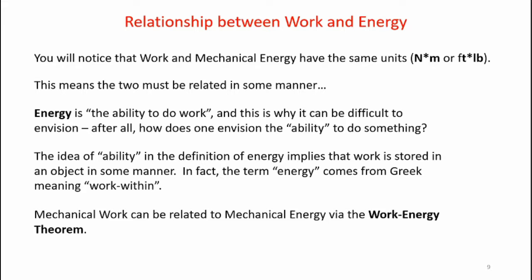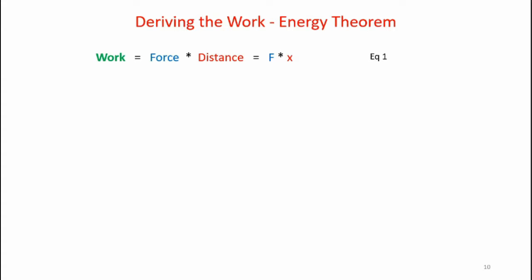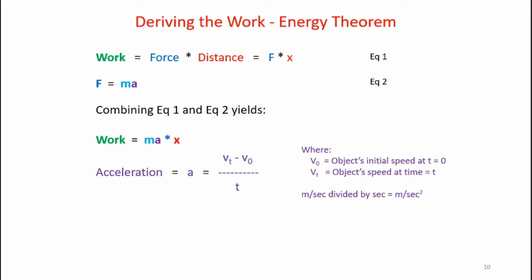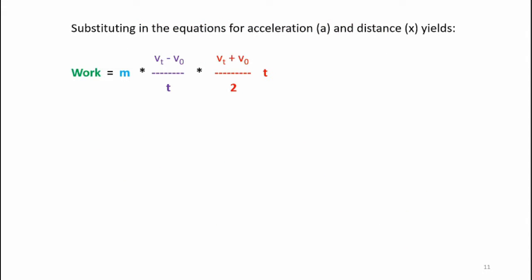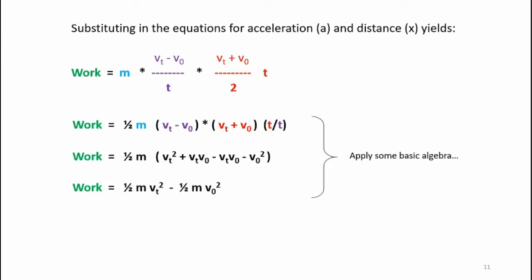Mechanical work can be related to mechanical energy via the work energy theorem. Let's derive the equation. First, we know that work is equal to force times distance, or F times x. We also know from Newton's second law that F is equal to ma. Combining those two equations, work is equal to ma times x. Acceleration is a change in velocity divided by time — v sub 0 is the object's initial speed at t equals 0, and v sub t is the object's speed at some time t. We can use this to calculate acceleration. We also know that distance is the average velocity times time. If we substitute these equations for acceleration and distance into the work equation, we ultimately see that work is equal to one-half m v sub t squared minus one-half m v sub 0 squared.